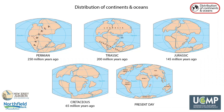Continents move and oceans open and close over tens to hundreds of millions of years because of plate tectonics. Plates typically only move around 2 to 10 centimeters per year, but over millions of years, this motion alters the size, shape, and depth of ocean basins and the distribution of land masses. The location of oceans and continents, including mountains, influences how heat is transported by ocean and atmospheric circulation and where ice accumulates on land, which in turn shapes climate, biomes, and ecosystems.